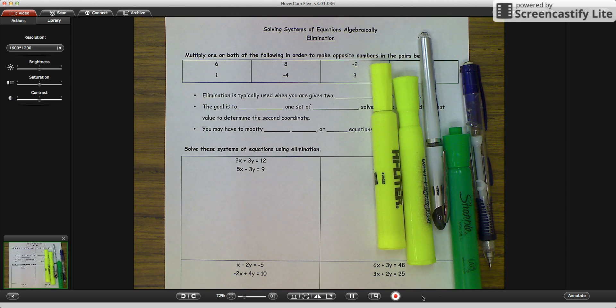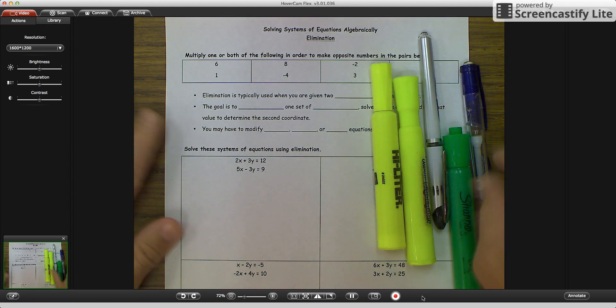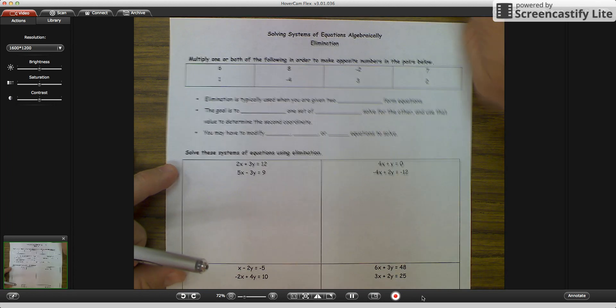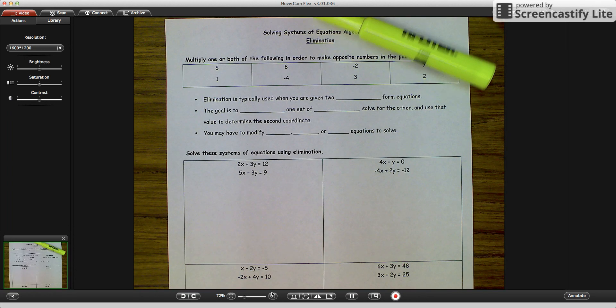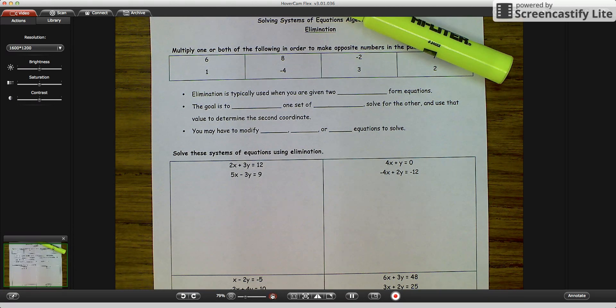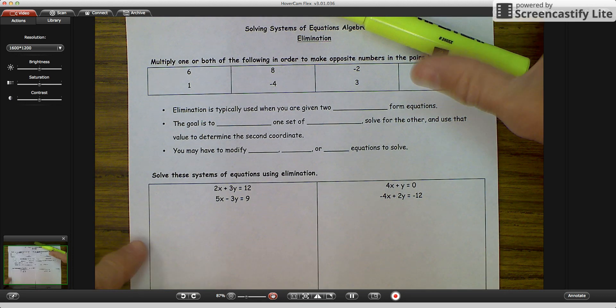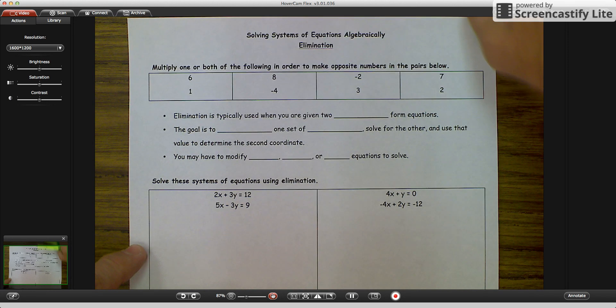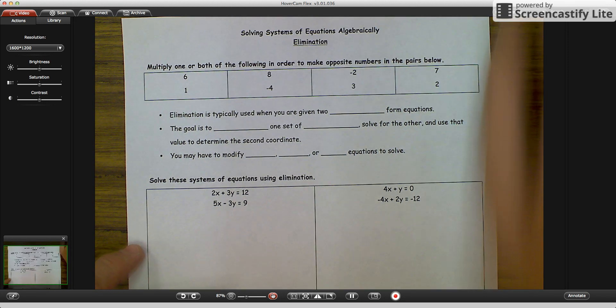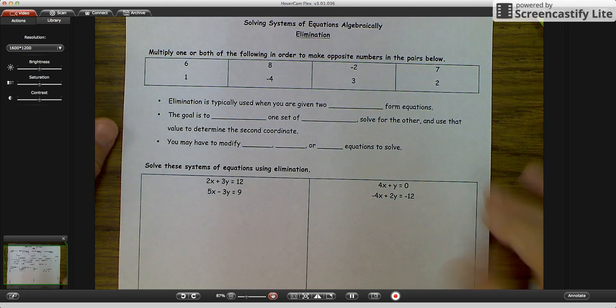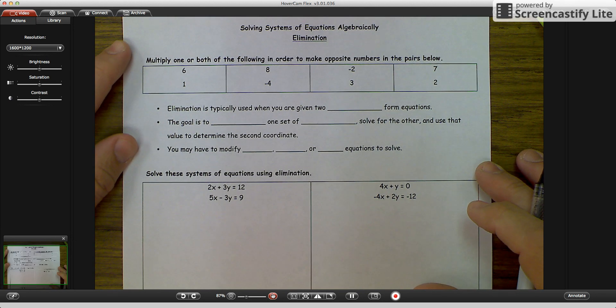And now we are entering into our third way to solve for a system of equations. So the third method that we're going to use is called elimination. I'm going to increase the size here so you can see it a little bit better. And using the word elimination is we want to eliminate one of the variables in order to solve for the other.